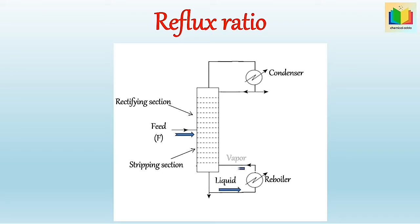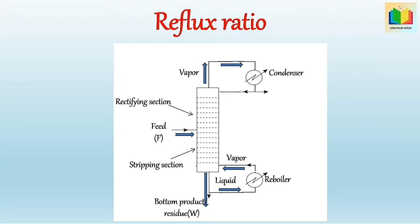Vapors generated in a reboiler are fed to the bottom of the column. The liquid removed from the bottom of the column is called the bottom product or residue, which is rich in the less volatile component. The vapor rising from the top of the column is fed to the condenser. Part of the condensed liquid returned to the column is called reflux — by doing reflux we can increase the quality or purity of the product. The remaining part withdrawn is called the top product or distillate, which is rich in the more volatile component.